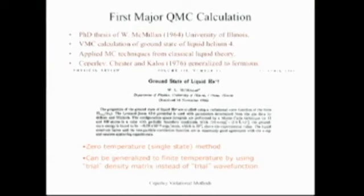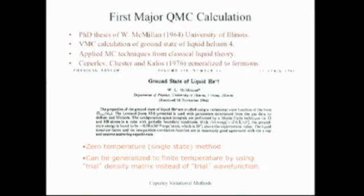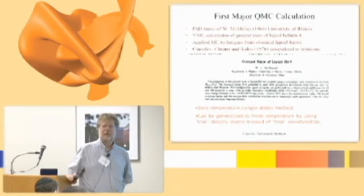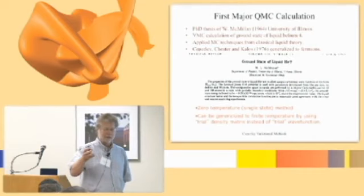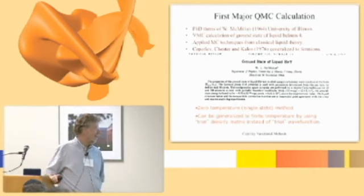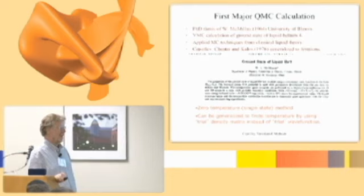But it was really a landmark calculation. Variational Monte Carlo is a zero temperature method — you're trying to calculate properties of a single wave function. We generalized this a decade later to fermions; McMillan did it for bosons. He was trying to answer the question on liquid helium: how can you describe the correlations at zero temperature? It's related to Bose condensation — how do you describe a Bose condensate of a strongly interacting system?